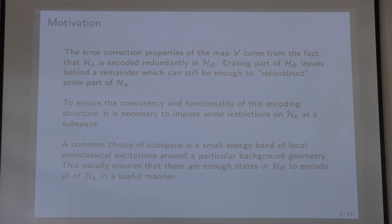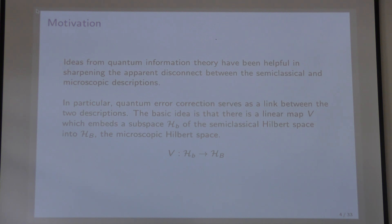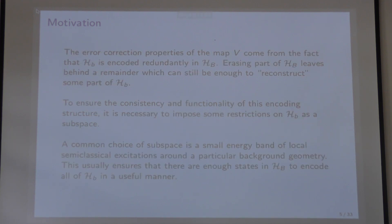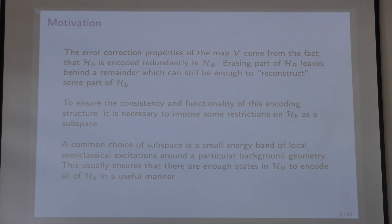When you say semi-classical workspace, you mean about a particular background? Yes, for example. We'll have a very explicit model later. The error correction properties of the map V come from the fact that H_b is encoded redundantly in H_B. What that means is that erasing part of H_B leaves behind a remainder which can still be enough to reconstruct some part of H_b. A common choice of subspace consists of a small energy band for local semi-classical excitations around a particular background geometry.